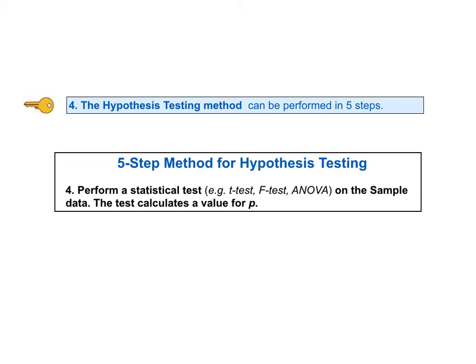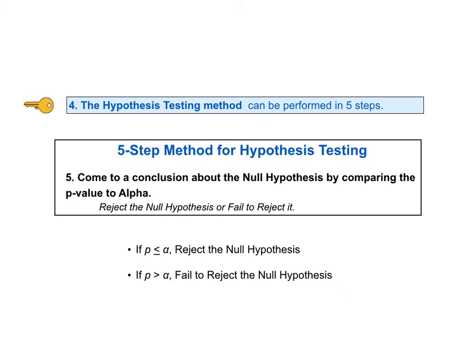In step four, the statistical test is performed. The inputs include our selection of the value for alpha, the data, and whether the test is two-tailed, left-tailed, or right-tailed. This is explained in the video on alternative hypothesis. The output includes a value for p, the p-value. p is the actual probability of an alpha error calculated from the sample data. There is also a separate video on p. In the fifth and final step, we come to a conclusion about the null hypothesis by comparing p to alpha. If p is less than or equal to alpha, then the probability of an alpha error — a false positive — is less than or equal to the maximum value for p which we said we would accept, and still call the difference, change, or effect statistically significant. So we conclude that there is a statistically significant difference, change, or effect, and thus we reject the null hypothesis.